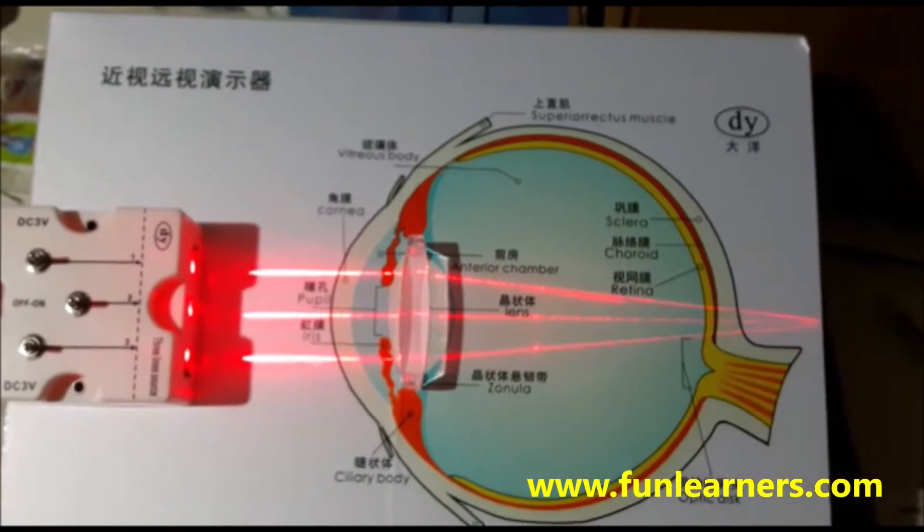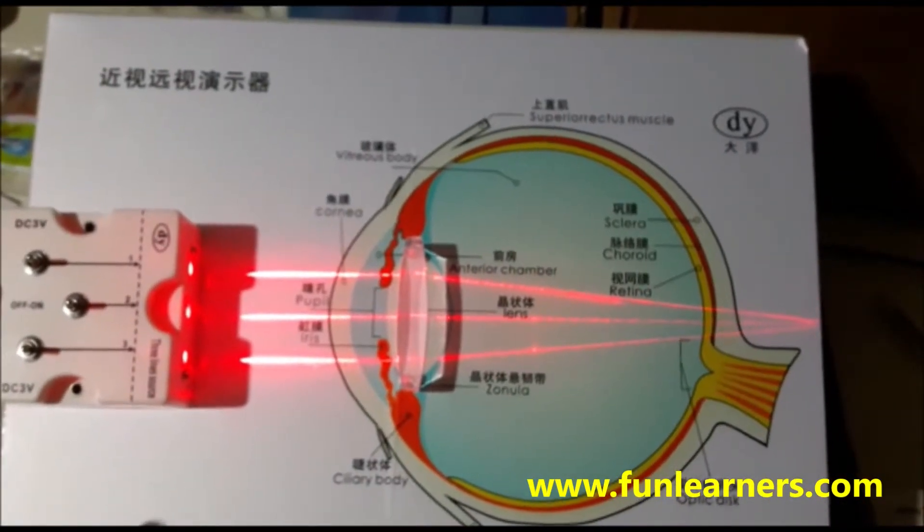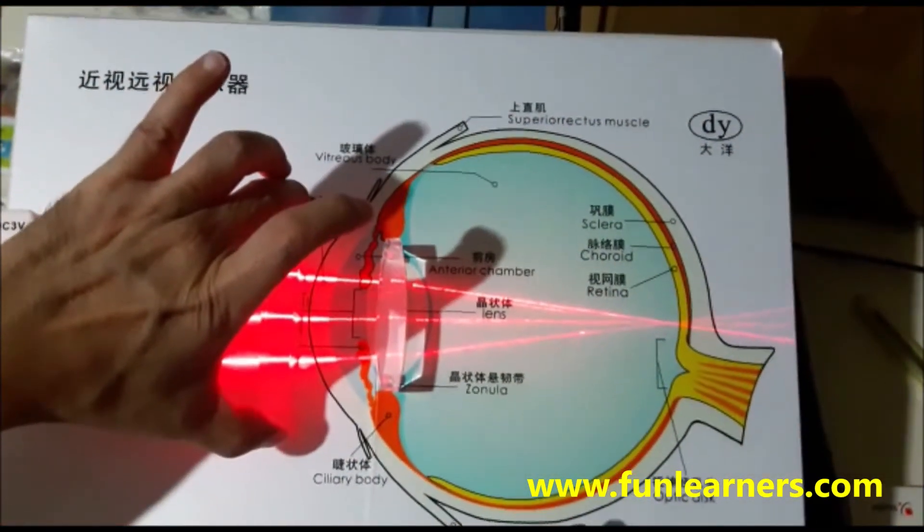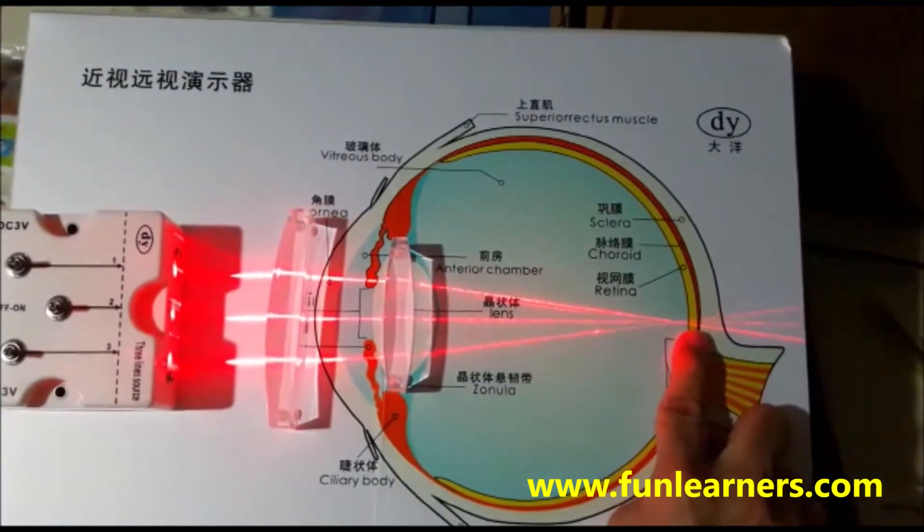So what we do, we put a converging lens in front here. Then you converge the light ray back to the retina.